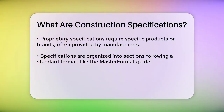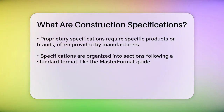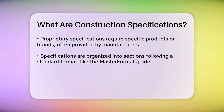Proprietary specifications are used when a specific product or brand is required. These specs are often provided by the product manufacturer and include detailed information on how to install and test the product. This type is commonly used in renovations where specific materials need to match existing ones.